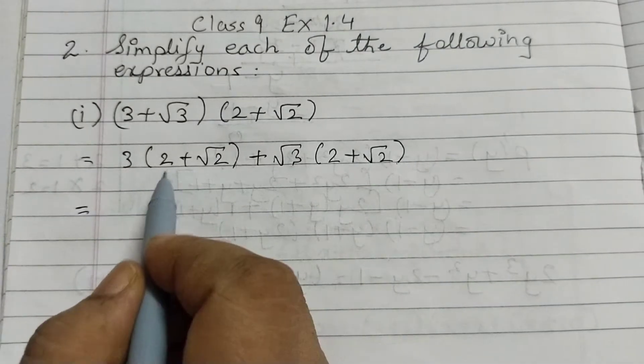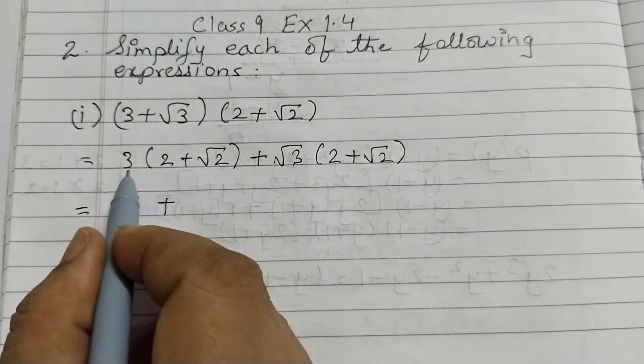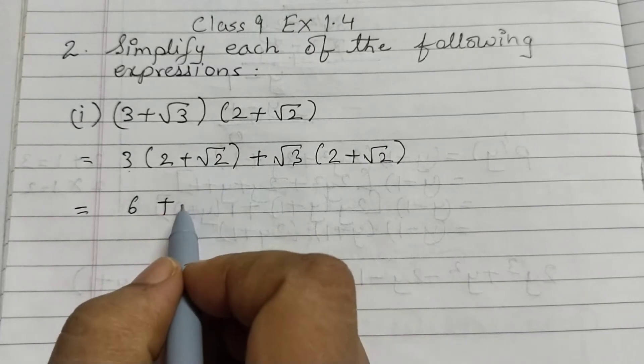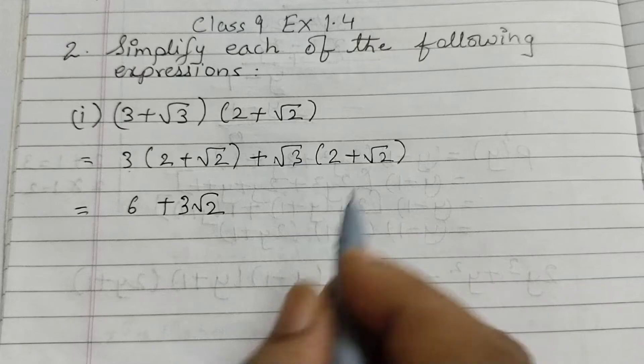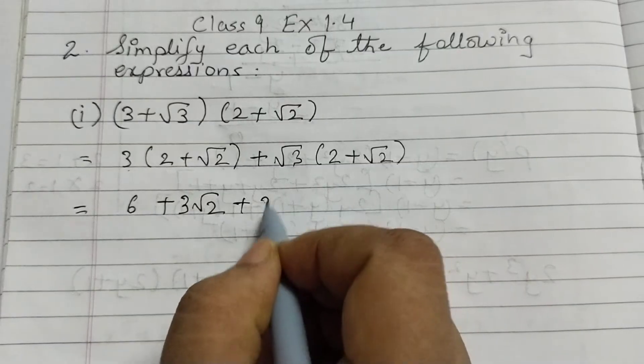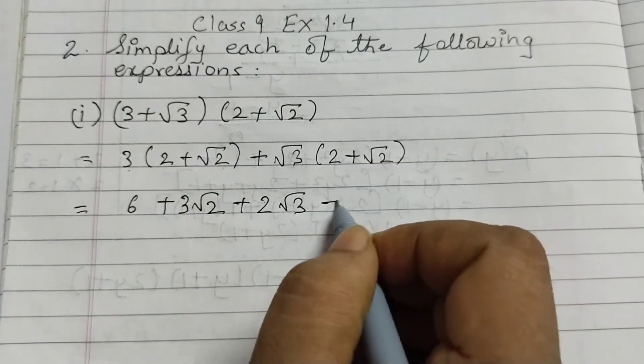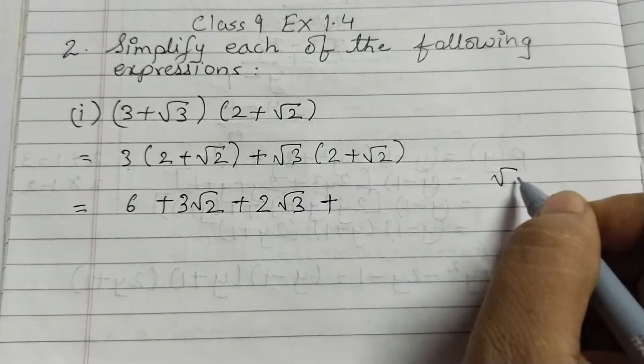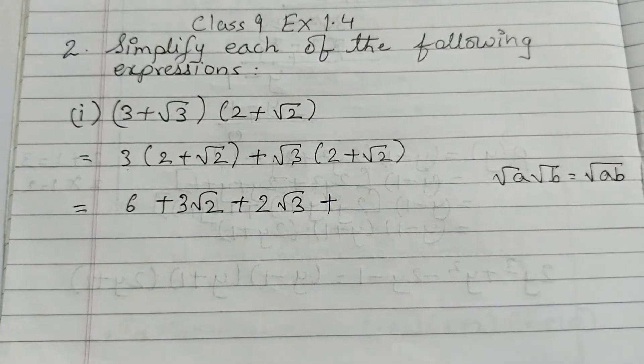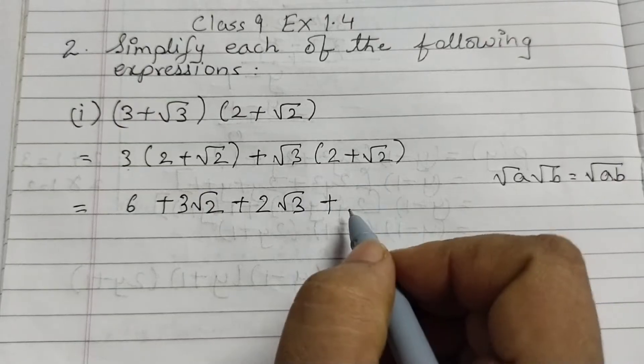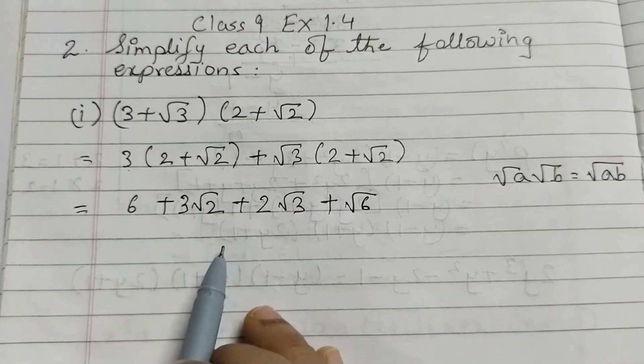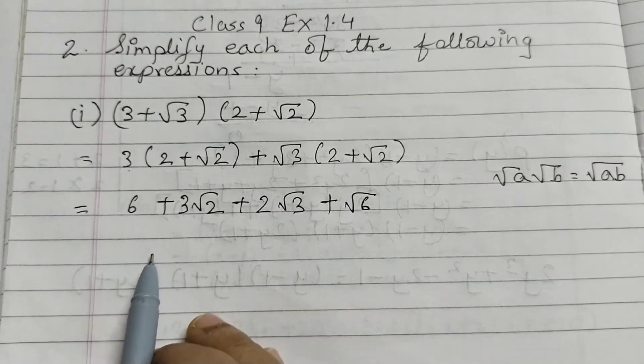That equals to 3 into 2, 6 plus 3 into root 2. We cannot multiply 3 into root 2 as such, so this will remain as it is, 3 root 2 plus root 3 into 2. Again these are unlike, so this will remain as 2 root 3 plus root 3 into root 2. We know that root a into root b equals under root ab. So here 3 into 2 is 6, so this will become square root of 6 and this is the final answer. We cannot simplify any further because these are all unlike terms.